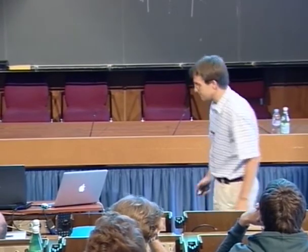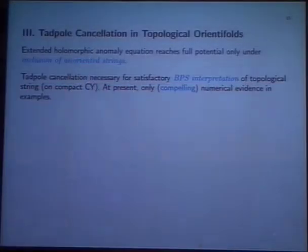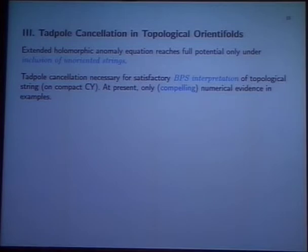This extended holomorphic anomaly only reaches its full potential if you include unoriented strings. The tadpole cancellation between the orientifolds, O-planes, and D-branes is necessary for the BPS interpretation of the topological string, at least on compact Calabi-Yaus. At the moment, I have only numerical evidence for this statement, but I think the numerical evidence is very compelling — I don't see really a way around it.